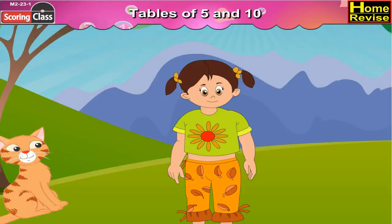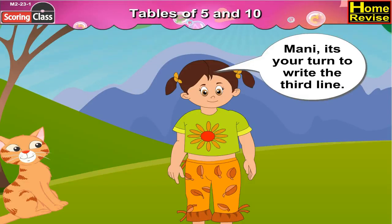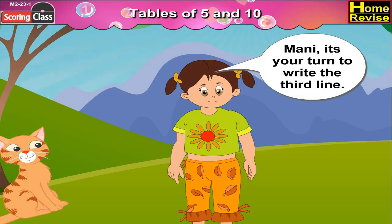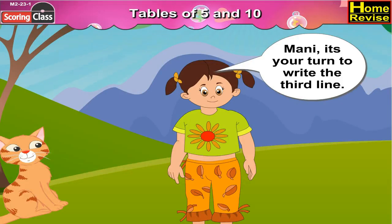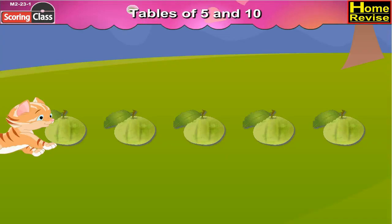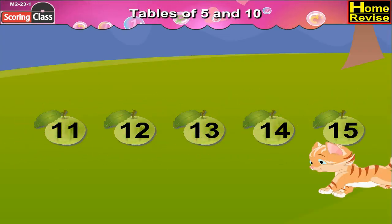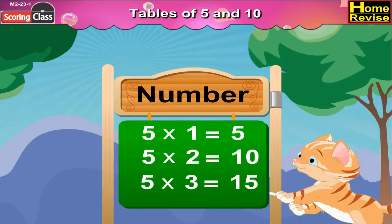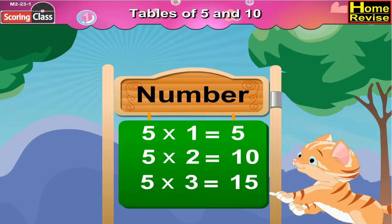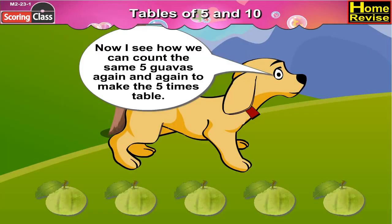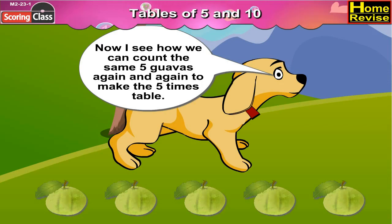Sonu says, 'Moni, it's your turn to write the third line.' So Moni counted the same five guavas a third time, counting forward from ten. She wrote: five multiply by three is equal to fifteen. Five threes are fifteen. Moti says, 'Oh, now I see how we count the same five guavas again and again to make the five times table!'